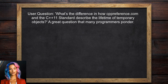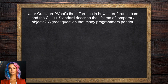Let's set the stage with a specific question from one of our viewers. They asked: what's the difference in how cppreference.com and the C++11 standard describe the lifetime of temporary objects? This is a great question that many programmers ponder.